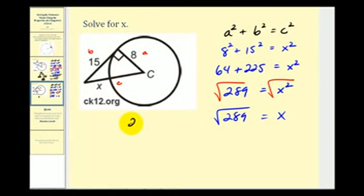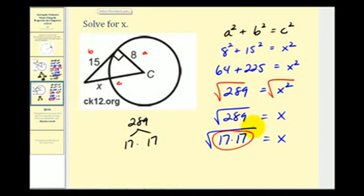And actually, 289 is a perfect square. And it might not be easy to recognize, but 289 is equal to 17 times 17. So this simplifies nicely. X is equal to 17 units.